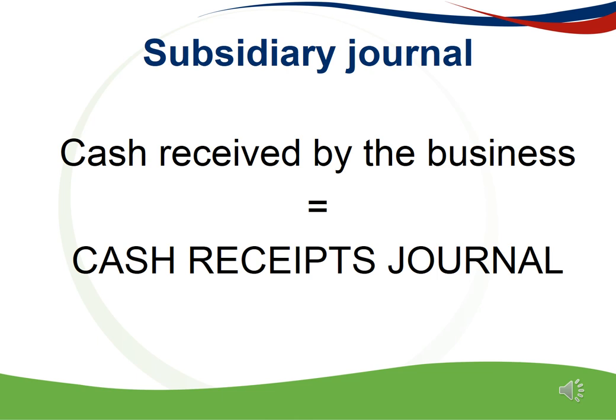Financial accounting is the systematic recording of transactions. Subsidiary journals, also known as books of first entry, are the starting point for recording any transaction that took place. The source document for the transaction contains all the information needed. Mr. Satole deposited cash as a capital contribution into the business bank account. Whenever the business receives cash, the cash receipts journal will be used to record the transaction.